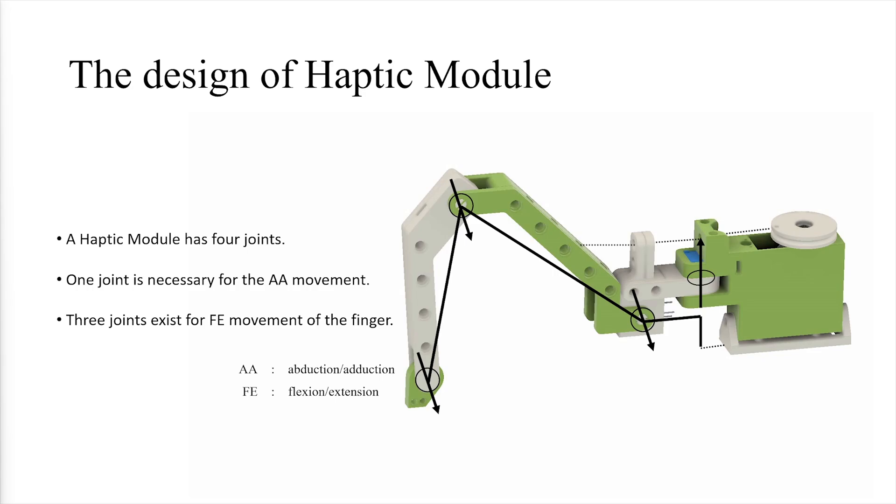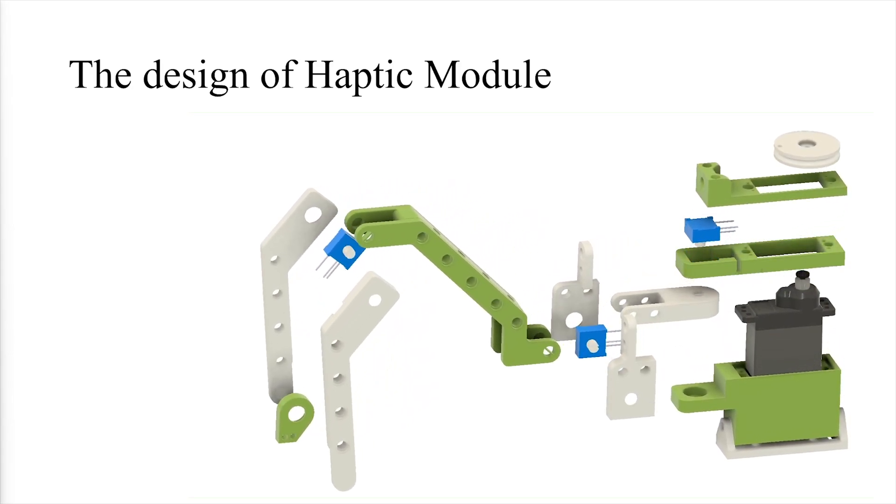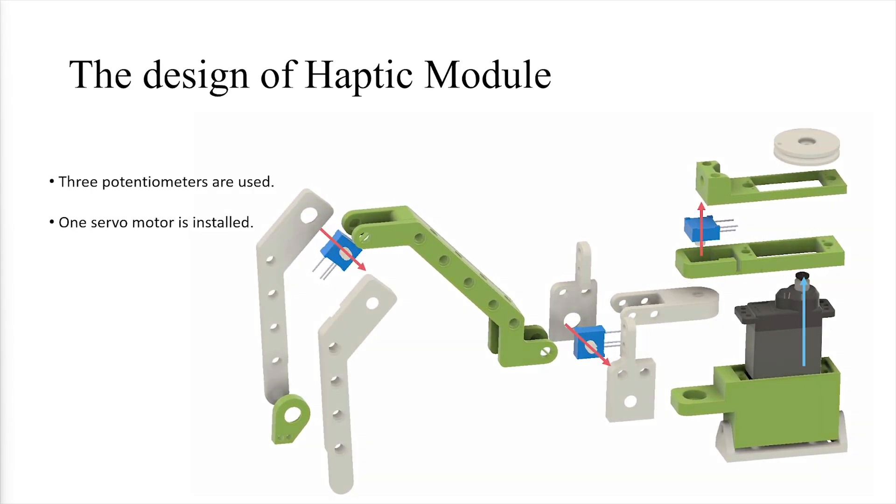The module is equipped with three potentiometers, which are essential for accurately detecting and measuring the angles of finger joints, ensuring precise movement control. Additionally, one servo motor is installed, providing the necessary actuation to drive the finger movement in coordination with the sensors.